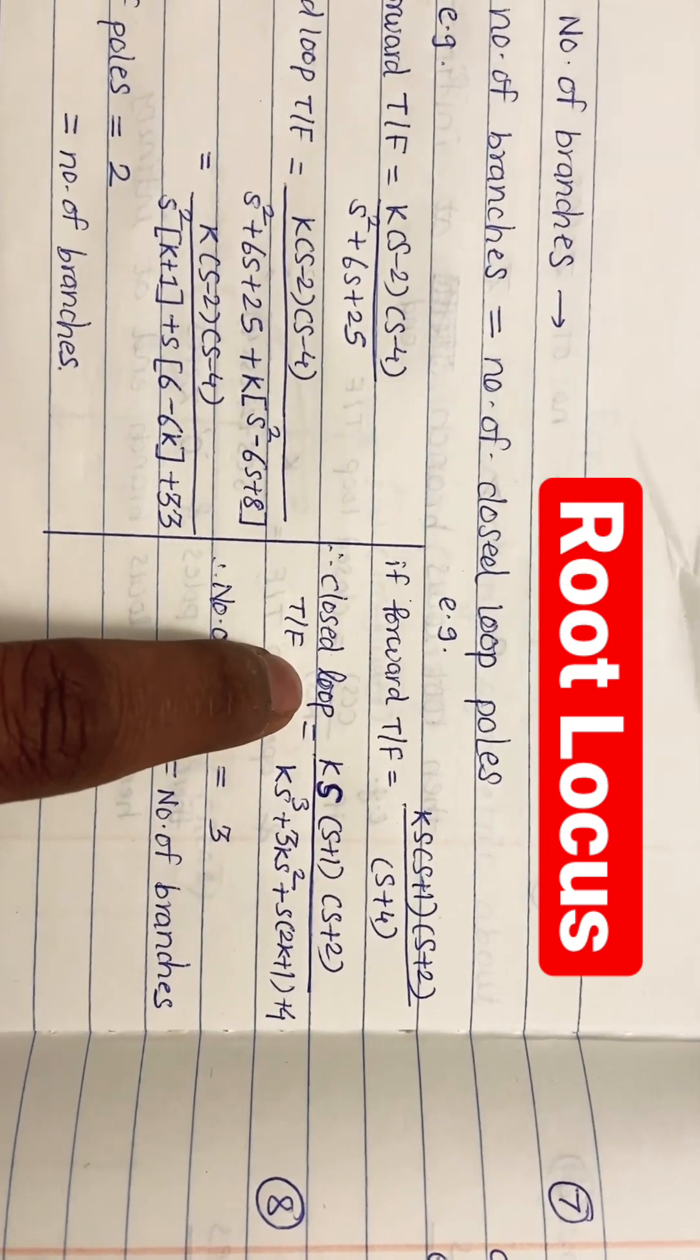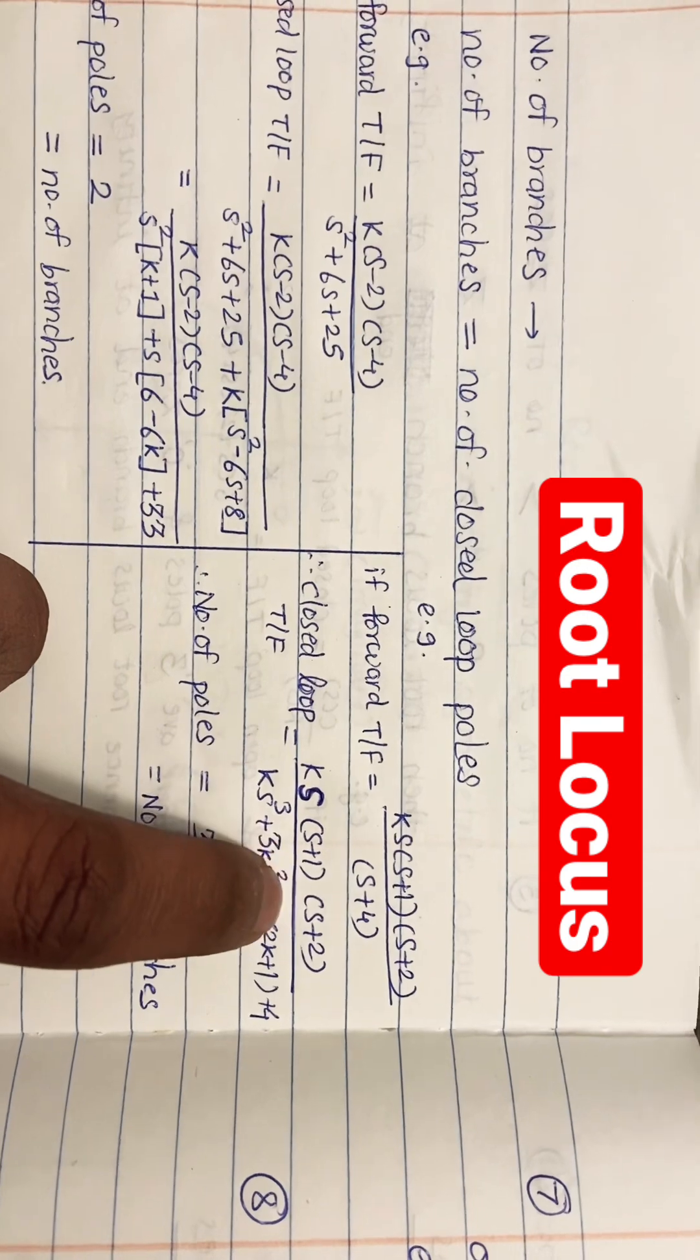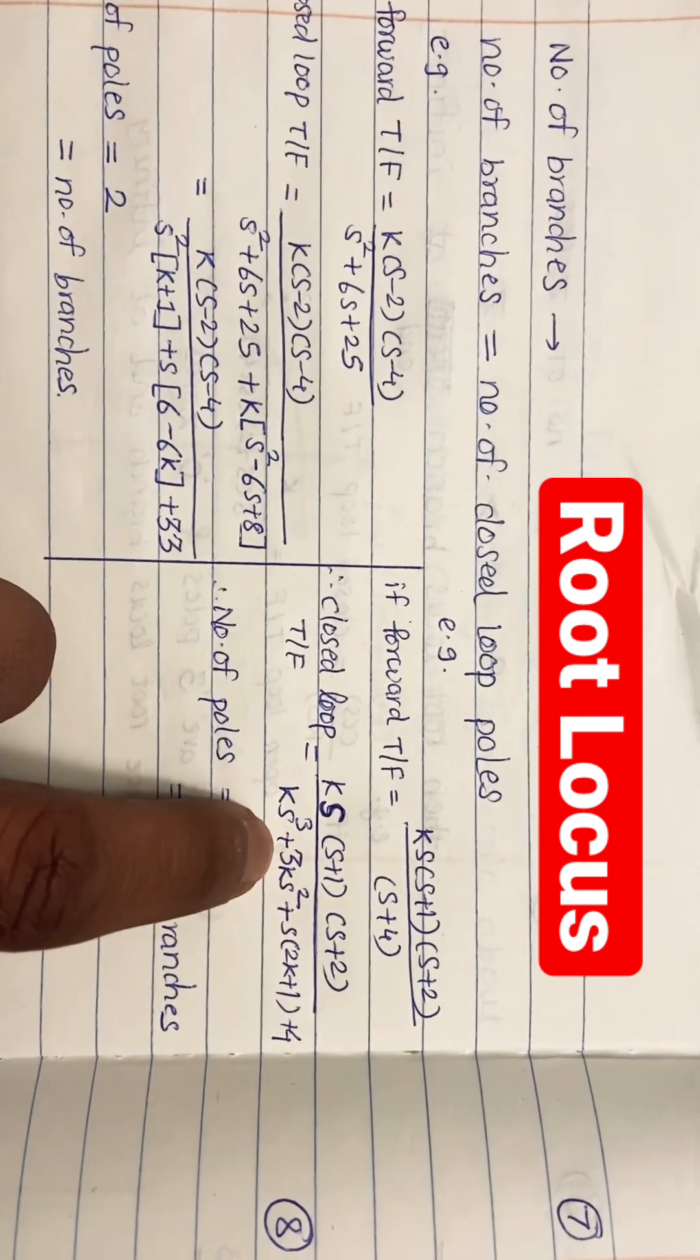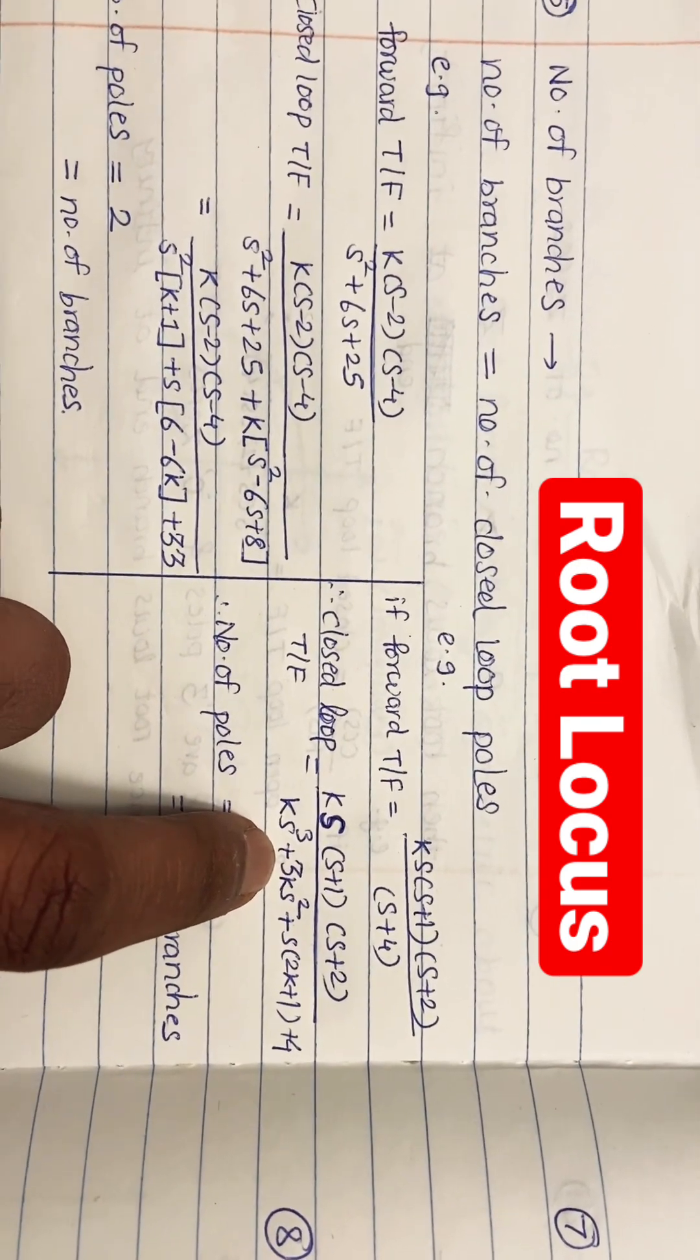Similarly, let's take another example. In this example, closed loop transfer function is this, and here if you see at the denominator, which once...